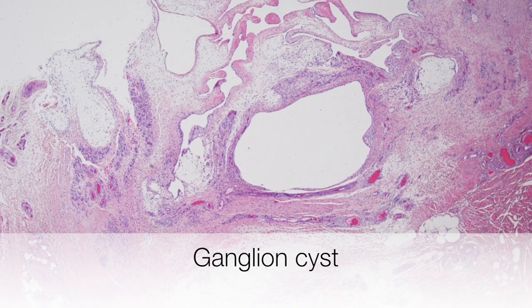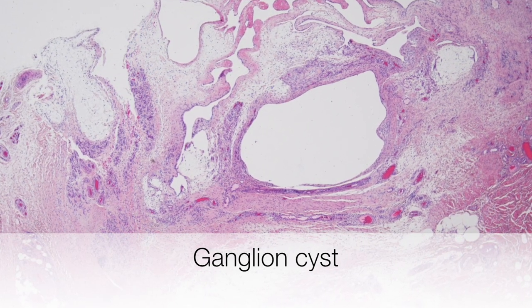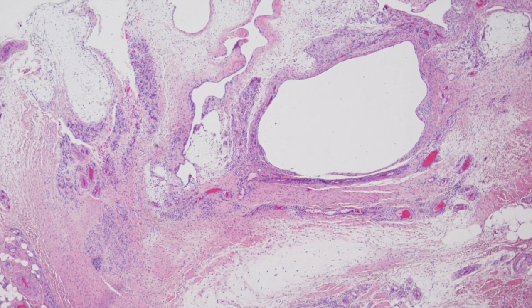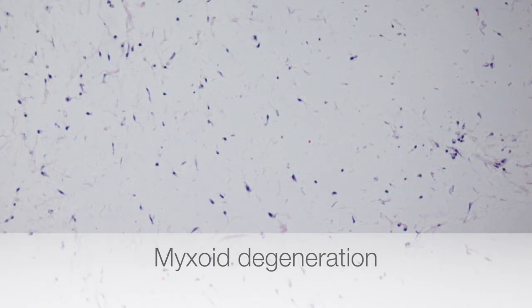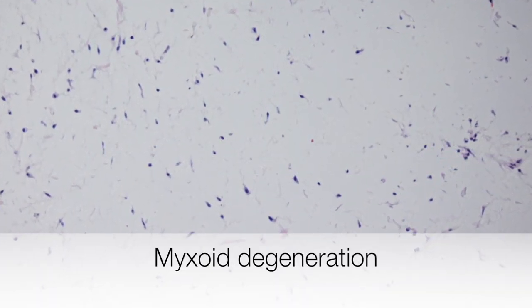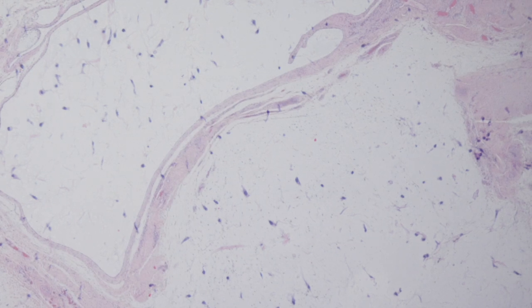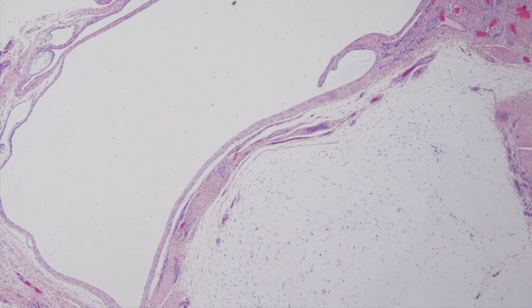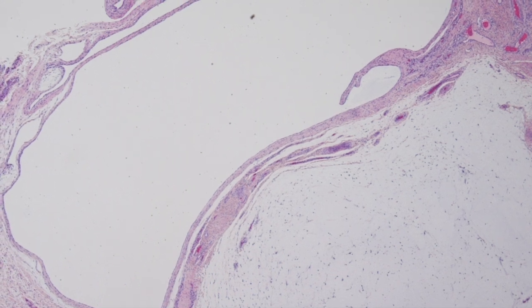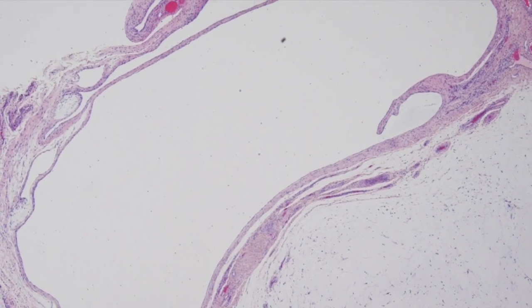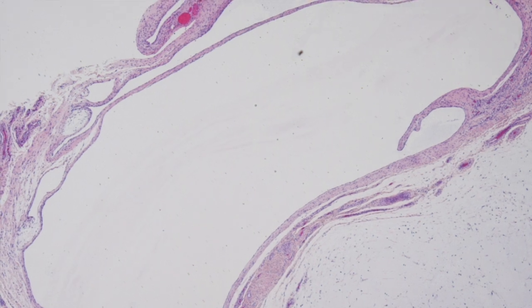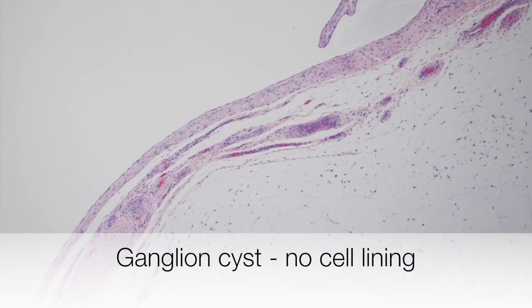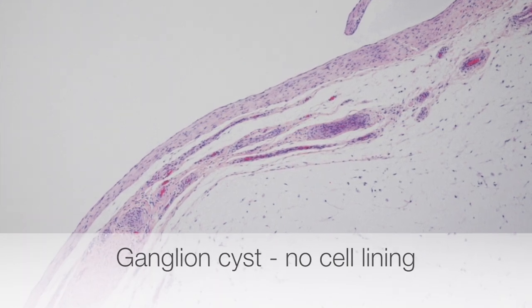This is a low power view of a ganglion. There are multiple cysts and areas of myxoid degeneration. On higher power, at the bottom of the picture there is an area of myxoid degeneration and above it there is a cyst. It can be seen that the cyst is devoid of lining cells.